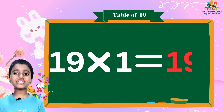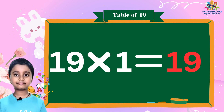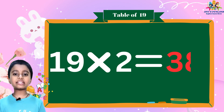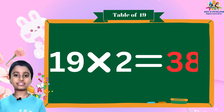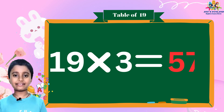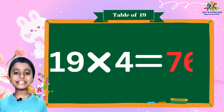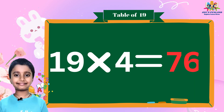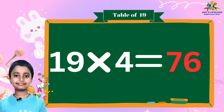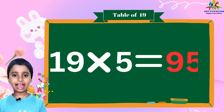19 times 1 is 19. 19 times 2 is 38. 19 times 3 is 57. 19 times 4 is 76. 19 times 5 is 95.